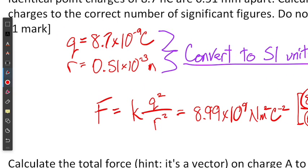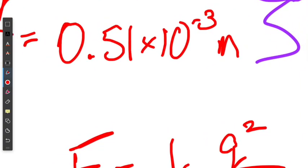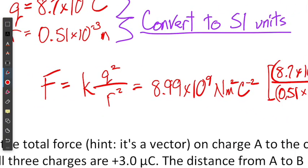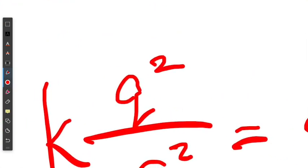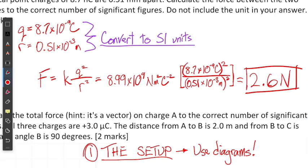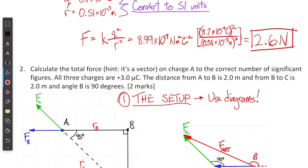The first charge is 8.7 nanocoulombs, so we convert that to 10 to the negative 9 coulombs, and our radius is in millimeters so we convert that as well. We use the equation from the data booklet for Coulomb's force, where force equals Coulomb's constant times the charge squared divided by radius squared. Since both charges are identical, that simplifies things, and our final answer is 2.6 newtons. Most students got this correct on the quiz, so well done.